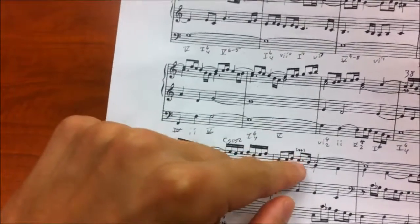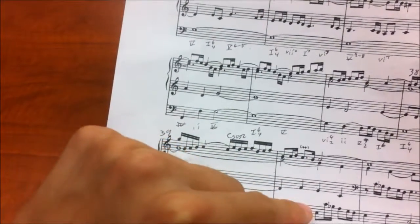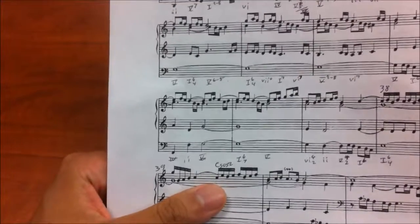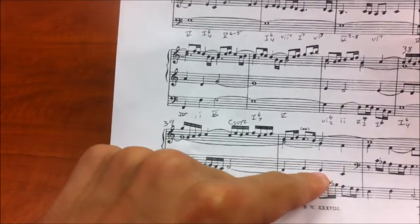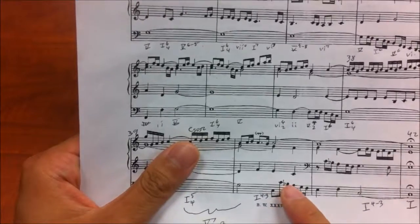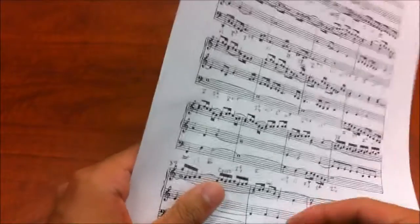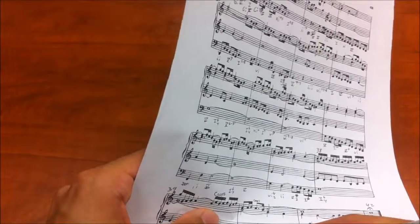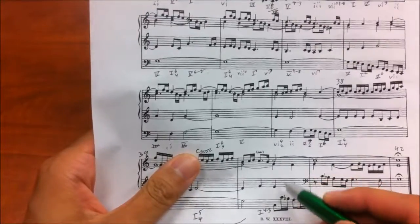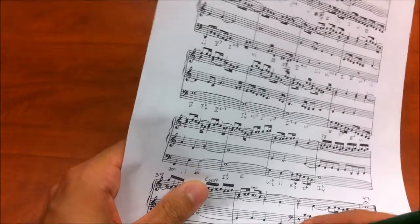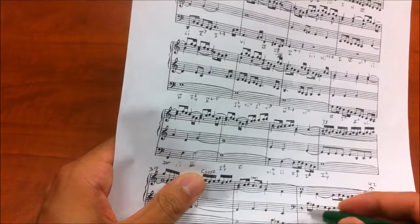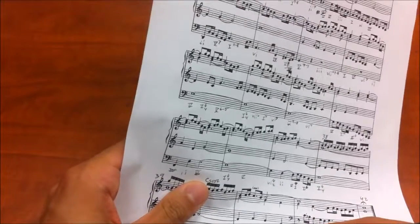On the second beat, I see a C, G, F, and G, which is a 1 for the 3 suspension because the F resolves down to an E. I see a Bb here. So I'm going to guess that we modulate to F major. And a C, E, and G gives you the 5 of F major, which goes to a 1 chord.